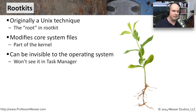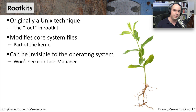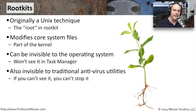A rootkit is invisible to the operating system — it's something you're not going to see through normal means. You're not going to be able to open your task manager and see it there. You're also not going to be able to identify it through normal antivirus utilities, anti-spyware utilities, or anti-malware utilities. They can't see it, and if they can't see the rootkit on your system, they obviously can't remove it either.